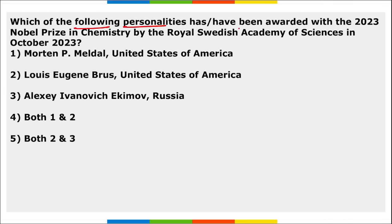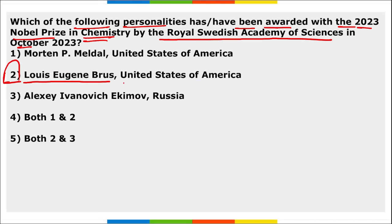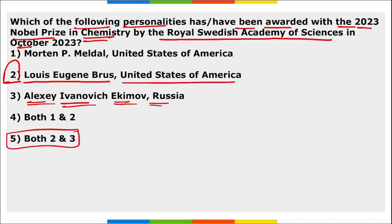Regarding the 2023 Nobel Prize in Chemistry: Louis Eugène Brus of the USA and Aleksei Ivanovich Ekimov of Russia were recently awarded the Nobel Prize in Chemistry by the Royal Swedish Academy of Science.